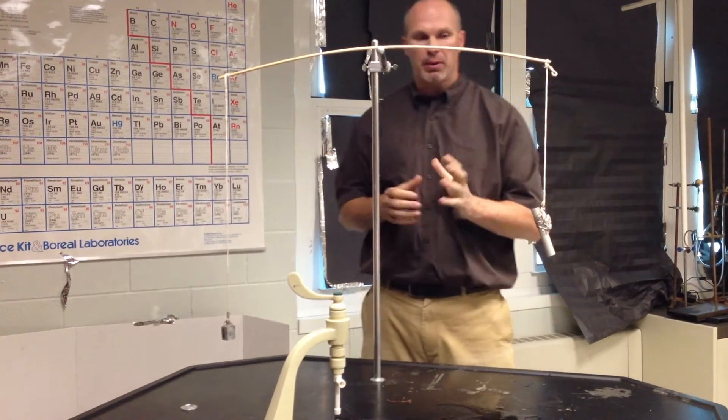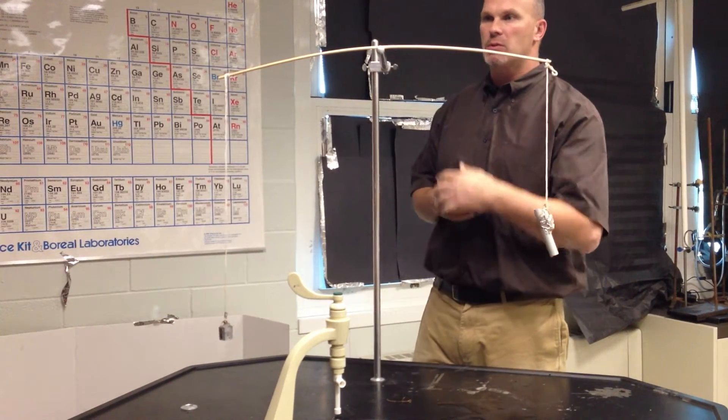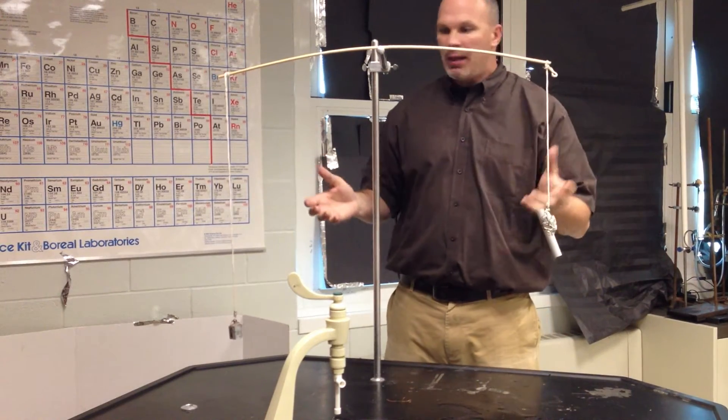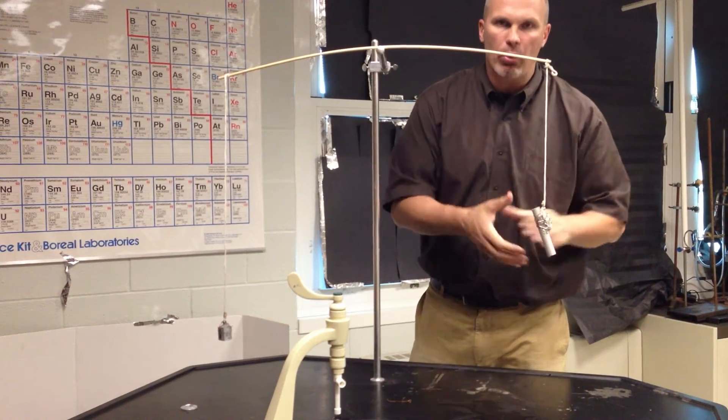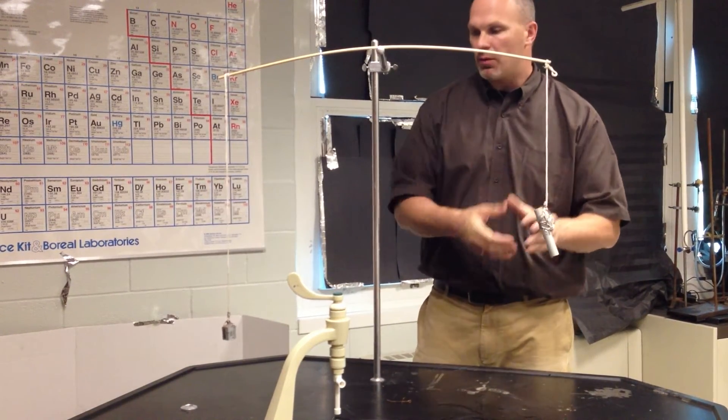So what he did was, probably—we don't know for sure because he was in love with fulcrums and levers—we're guessing that a fulcrum or lever like this was used. So he balanced the crown, which we think might be alloyed with a less dense metal like silver.